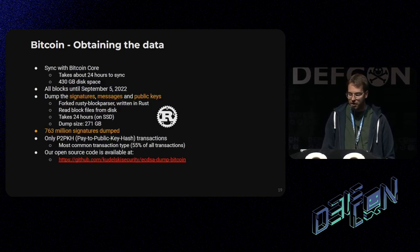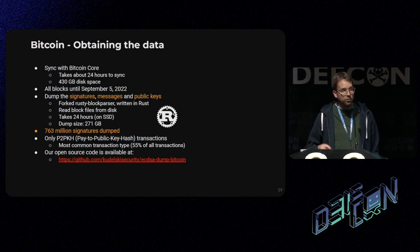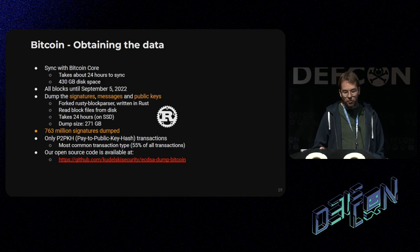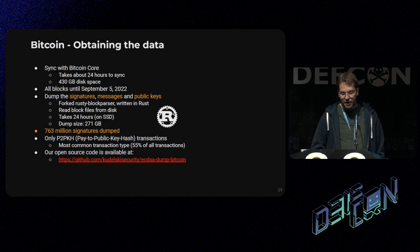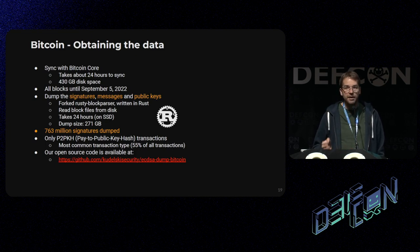To actually get the data, you'll need to let your Bitcoin client sync and download the whole chain. We did that — it took about a day, and we got all of the blocks until September last year. When it was synced, we dumped all of the signatures, public keys, and messages by just reading the block files from disk. We dumped about 700 million signatures. We only covered the most common type of Bitcoin signature, which is pay-to-public-key-hash signatures, but that covers more than half of the Bitcoin transactions.